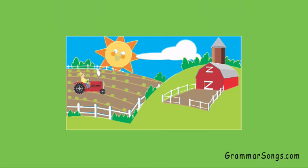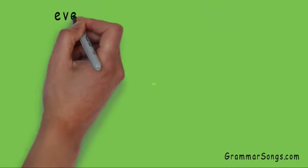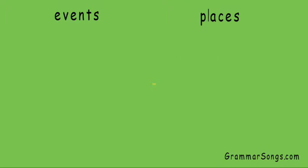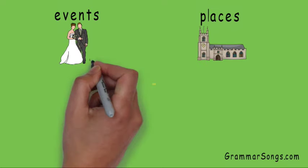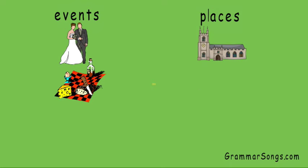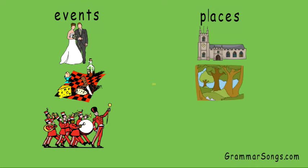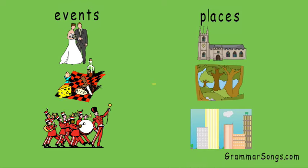A place is a basic concrete noun, while an event is an intangible or abstract noun. Events usually happen at places. For example, a wedding is an event that can happen at a place like a church. A picnic is an event that can happen at a place like a park. And a parade is an event that can happen at a place like a city. Events are made up of people, places, or things you can experience with your five senses, but the event itself is an abstract noun.